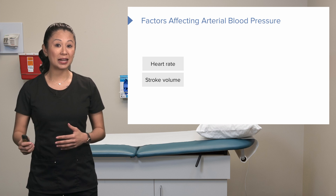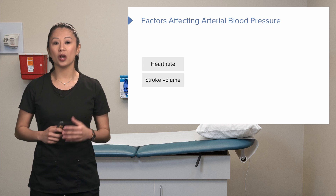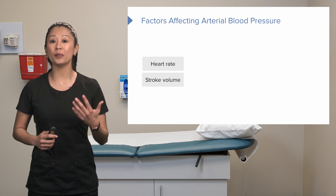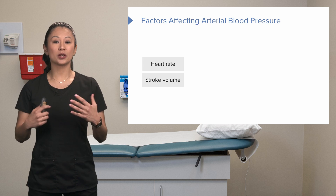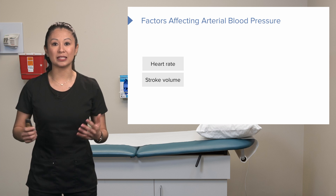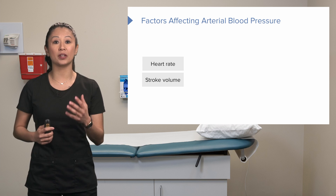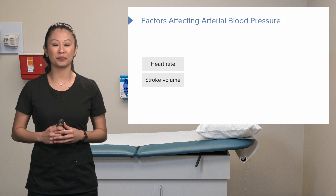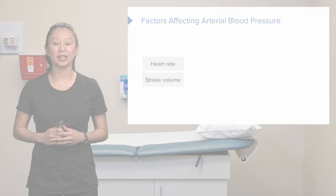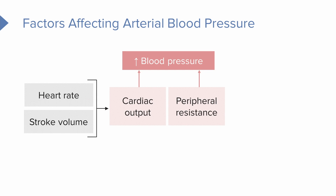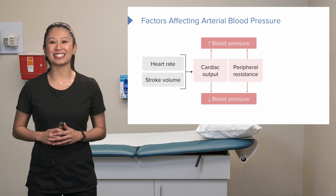When talking about factors affecting arterial blood pressure, we first consider stroke volume and heart rate. Stroke volume is the volume of blood ejected by the ventricles. Multiplied by heart rate, we get cardiac output. Cardiac output helps affect blood pressure — it can make it go up or down — as well as our peripheral resistance.